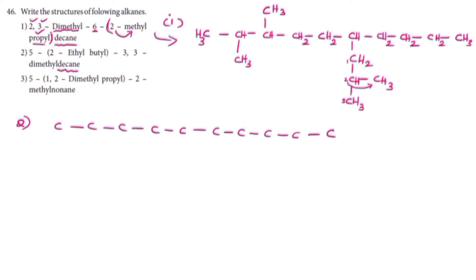Now the term is 3,3-dimethyl. This is the first concept of the methyl group. In the 5th position, within the bracket, the terms are: 1, 2, 3, 4, 5.